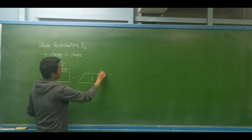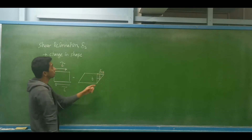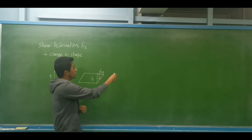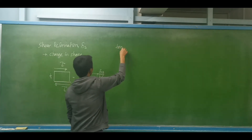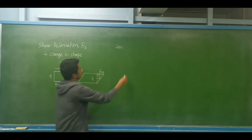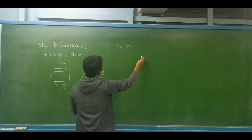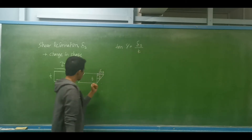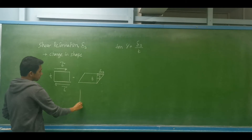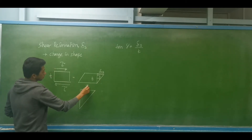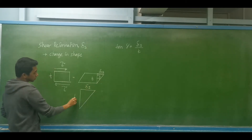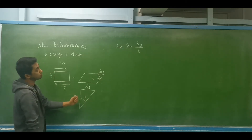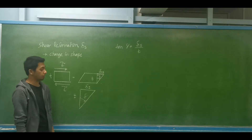This portion will be our delta sub S, or the shear deformation. To determine the deformation, we use a right triangle: the tangent of gamma is equal to delta sub S divided by the thickness. So the tangent of gamma equals delta sub S divided by that thickness — opposite over adjacent.